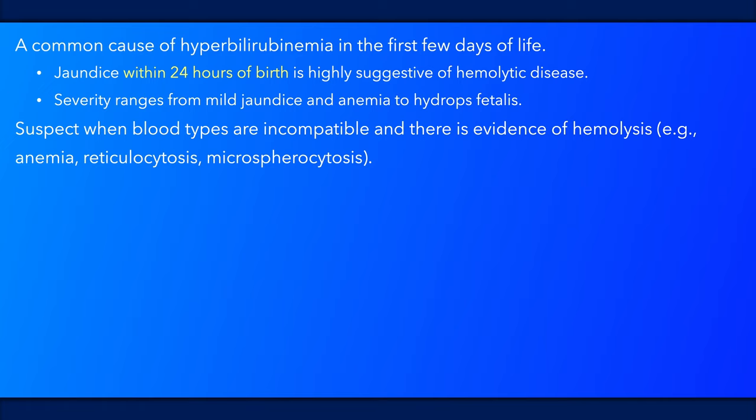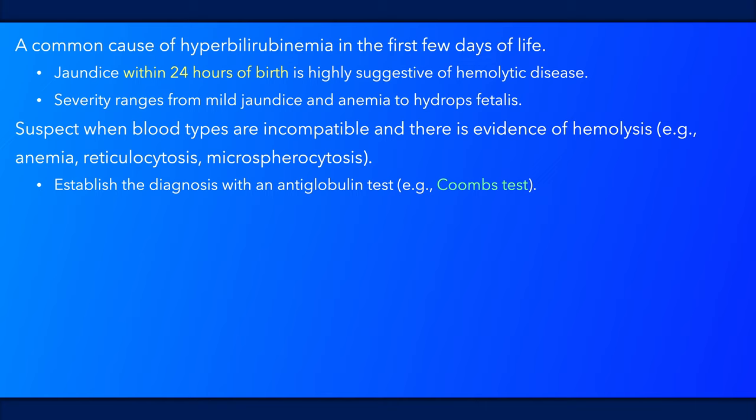Incompatible blood types and evidence of hemolysis should elicit suspicion. The diagnosis is established via a positive antiglobulin test — direct or indirect; either test will do. However, keep in mind that other causes of hyperbilirubinemia may coexist, particularly if hyperbilirubinemia is severe.